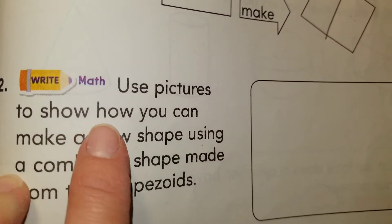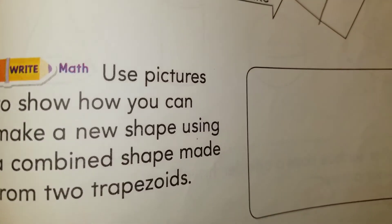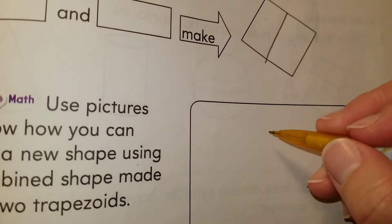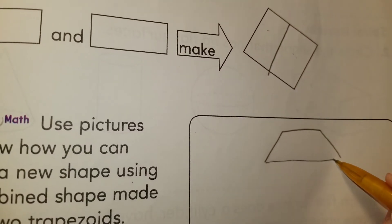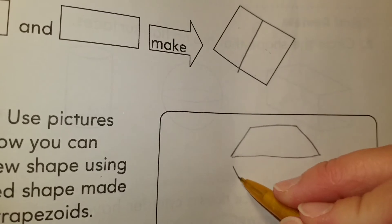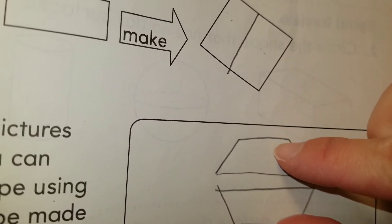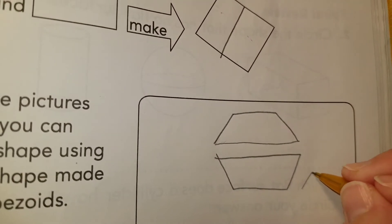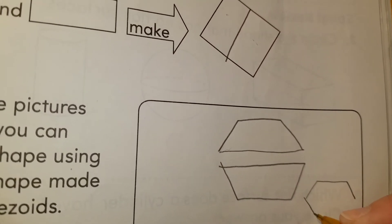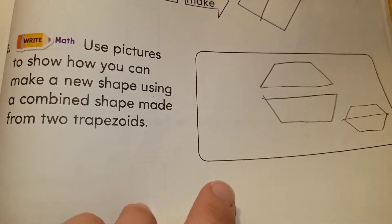Number two: use pictures to show how you can make a new shape using a combined shape made from two trapezoids. This is one trapezoid, and if you draw another trapezoid — put these trapezoids on the top with the other trapezoid on the bottom — one trapezoid on top of the other one makes a hexagon.